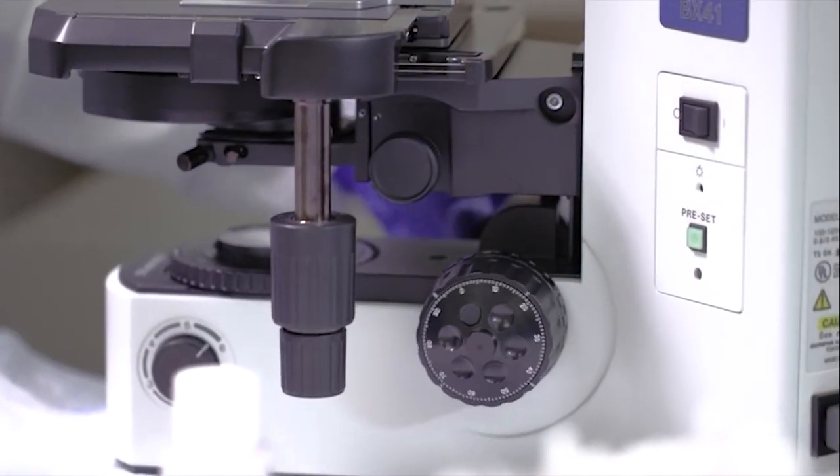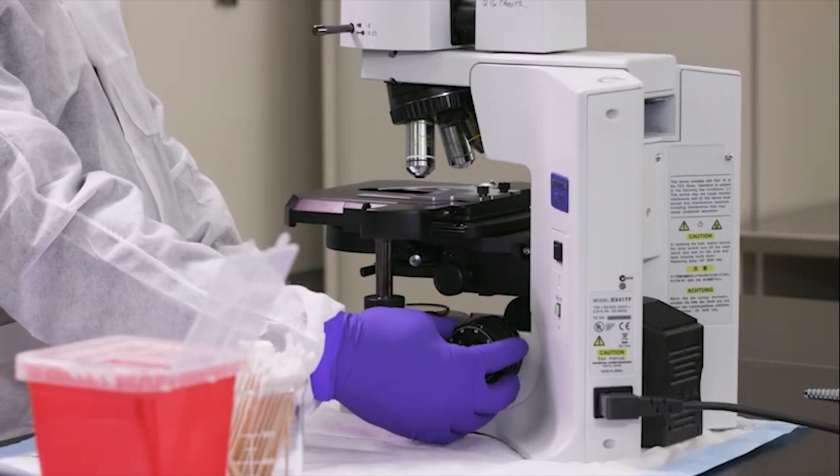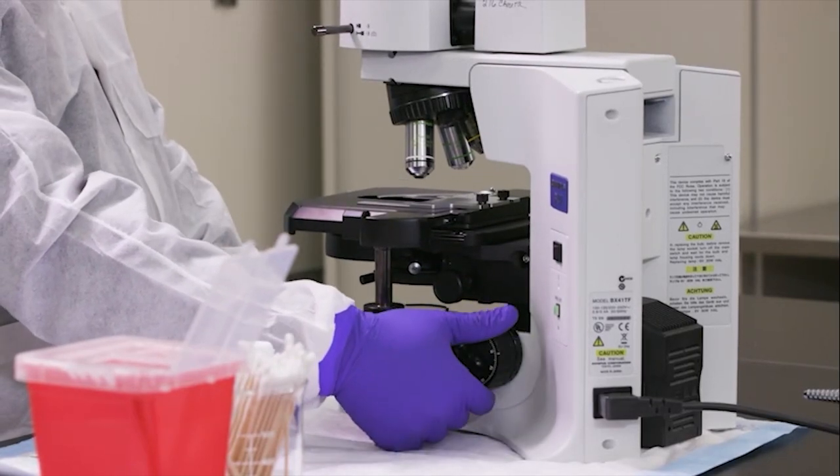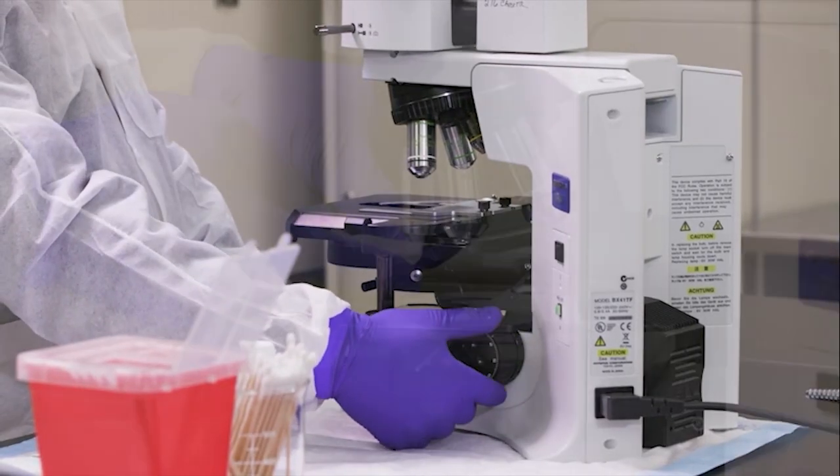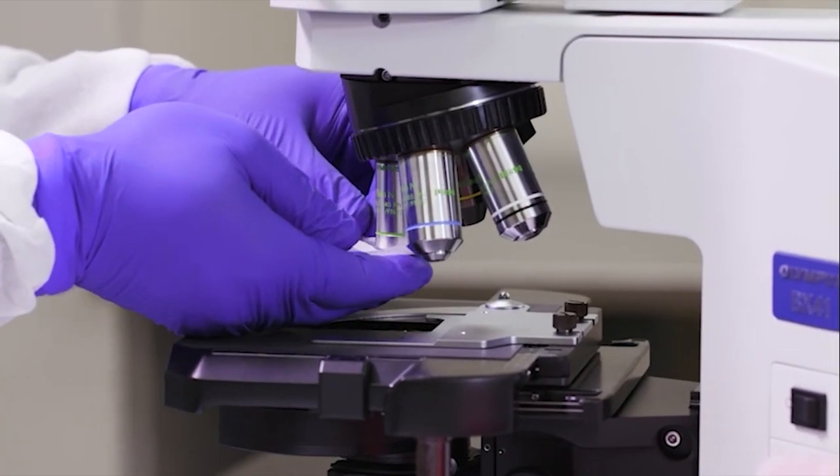Using the stage controls, lower the stage to reach the lenses on the condenser diaphragm. Clean each lens with lens paper.